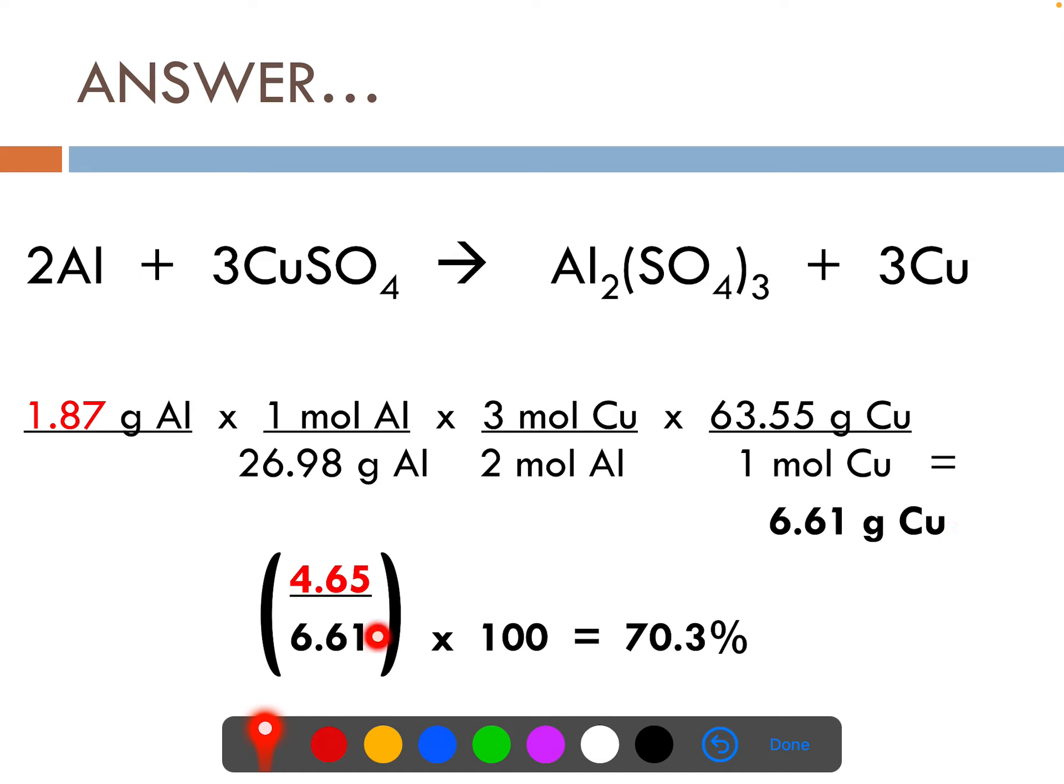So 6.61 grams is the theoretical amount from the problem. 4.65 grams is what was actually produced. 4.65 divided by 6.61 times 100 gives me a 70.3% yield.